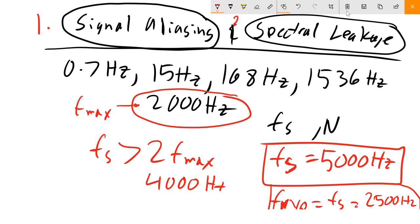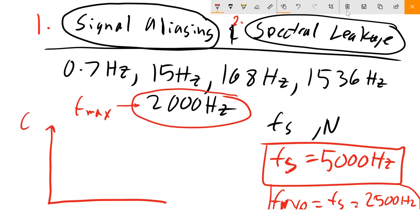Now for number two, spectral leakage, this one's a little bit more complex. It helps that we dealt with signal aliasing first. Let's think back and look at our frequency spectrum. We know we're going to plot our magnitude of harmonic coefficients, we're going to have frequency on this graph. We start at zero and finish at N over 2 delta F, which is the Nyquist frequency.